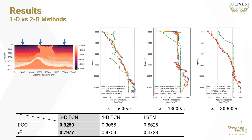Finally, we present the Pearson's correlation coefficient and R-squared coefficients computed over all estimated traces in the acoustic impedance profile with the ground truth for all methods. The proposed 2D temporal convolutional network outperforms both the 1D TCN and the LSTM at both metrics, scoring a Pearson's correlation coefficient of 0.9259 and an R-squared coefficient of 0.7977. This also agrees with the superior visual quality of the estimated section by the 2D TCN seen earlier.